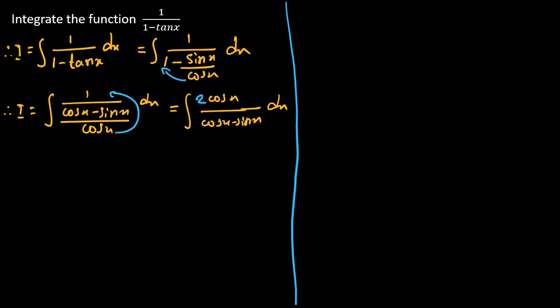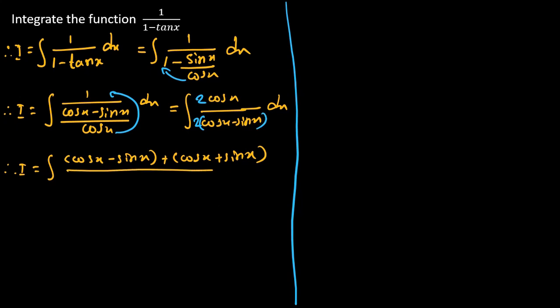Next, what we will do is multiply by 2 and divide by 2, because only then we will get the answer. We write 2 cos x in the numerator. Opening the bracket: cos x minus sin x plus cos x plus sin x gives 2 cos x. So, multiply by 2 and divide by 2, with denominator 2 into (cos x minus sin x) dx.